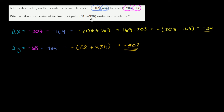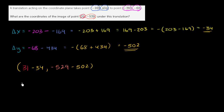So if we're starting at 31 comma negative 529, we're going to end up at 31 minus 34, that's how much we're going to shift it, and negative 529 minus 502. So 31 minus 34 is negative 3, and then negative 529 minus 502 is going to be negative 1,031.